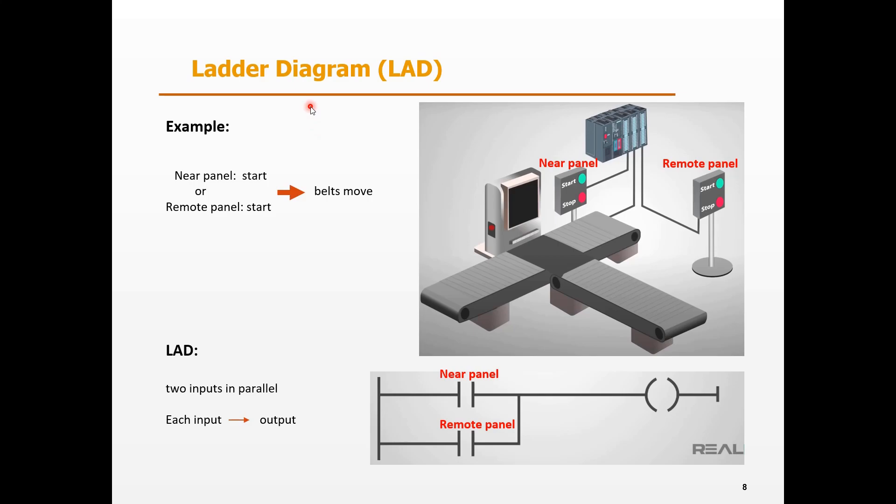Another example is the conveyor belt. There are two control panels located near and remote from the belts. Each panel can start the belts individually. In LAD, the two inputs are parallel in one horizontal line. Each input can trigger output signal individually.